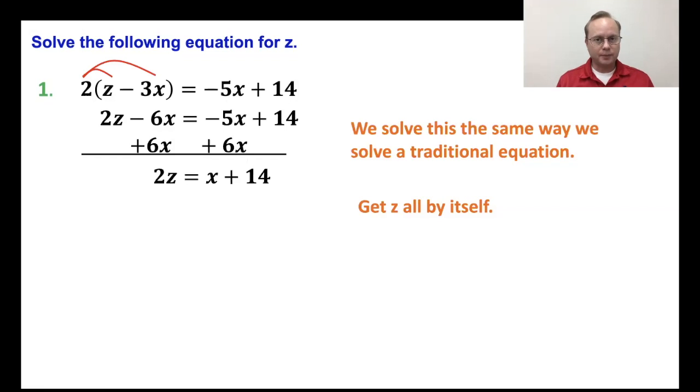Now I've almost got z all by itself. I've got one more thing I need to do. I need to get rid of that 2. This is a 2 times z. If it's 2 times z, the opposite of times, multiplication, is division. The opposite of multiplication is division. I'm going to divide both sides by 2. And when I divide both sides by 2, here's the catch. 2z divided by 2 is just 1z, which is z. That's what I'm looking for.